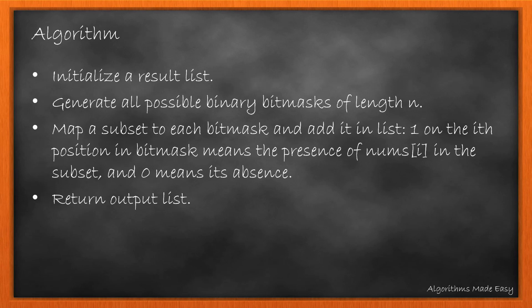Here's the algorithm. We initialize a result list. We then find the bitmask. Then, we map a subset to each bitmask and add it in the result list, wherein 1 on the ith position in bitmask means the presence of nums in the subset, and 0 means its absence. At the end, we return the output list.